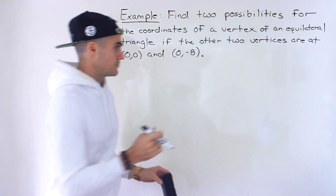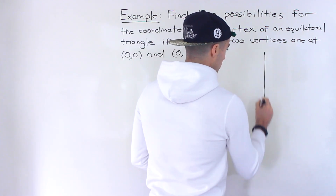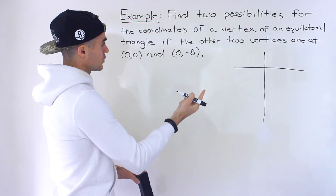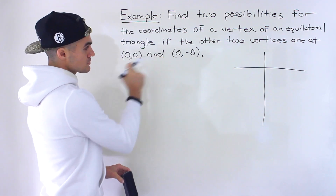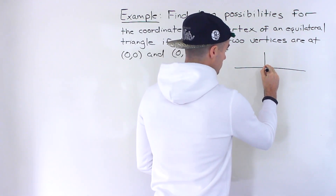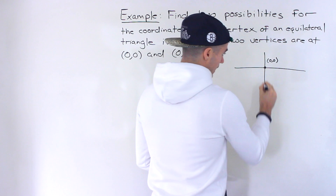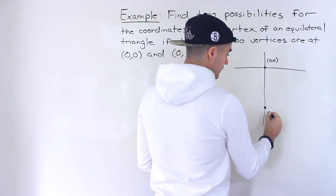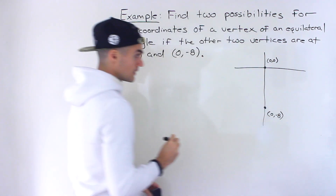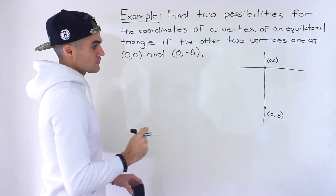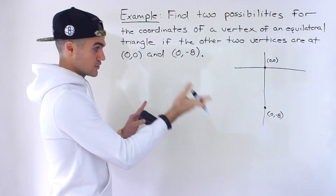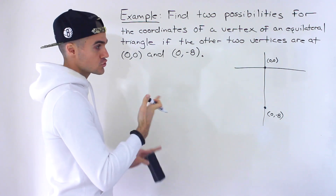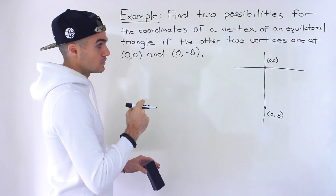To start this example off, let's draw a diagram of what's happening. We're going to be working with an equilateral triangle and we're given two of the vertices: zero and zero, and zero, negative eight. So zero and zero is over here, and then zero — same x value — but then we have a y value of negative eight, so that's going to be down here. Those are two points of a triangle and then we have to find two possibilities for the third point in order for the triangle to be an equilateral triangle.